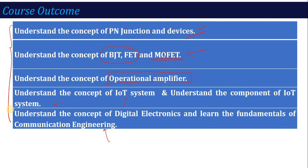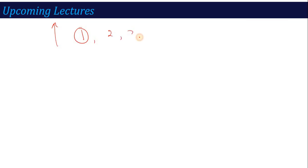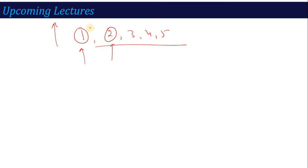So, regarding the upcoming lectures, I will go straight forward from unit 1, 2, 3, 4, and 5 — there will be no skipping of any unit. I recommend you also start the lectures from unit 1 in order, because if you want to grasp the subject very well, follow unit 1, 2, 3, 4, and 5 in sequence. Stay tuned — we will start unit number 1 about PN junction diode in the next lecture. Thank you.